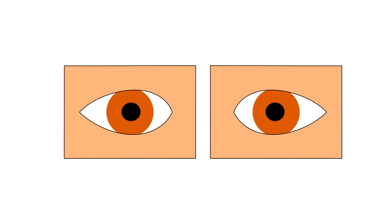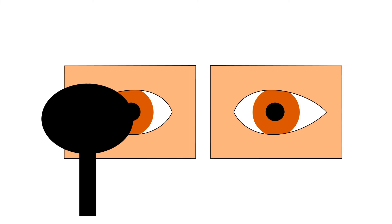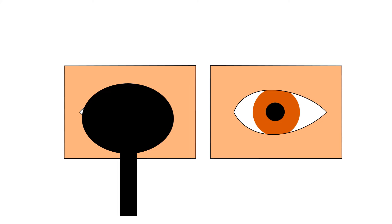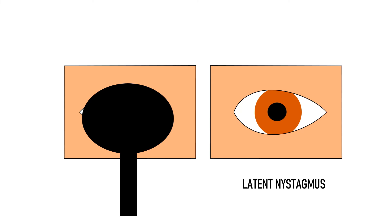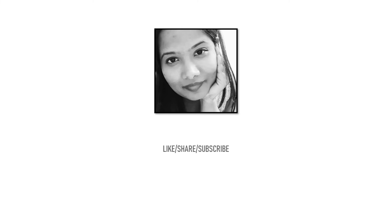In another scenario, when performing the cover-uncover test, covering one eye may cause the other eye to display rapid involuntary jerky movements not previously present. This is nystagmus, and this type — revealed by covering one eye — is known as latent nystagmus. This concludes the discussion on cover-uncover and alternate cover tests. Please share this video if you found it useful and subscribe to the channel to support free education.